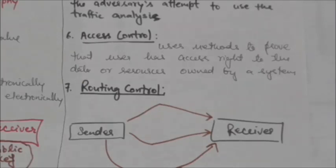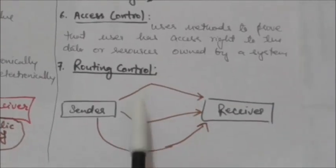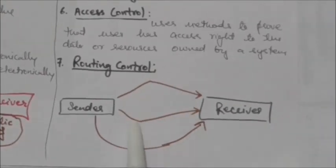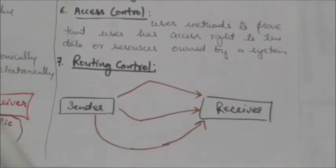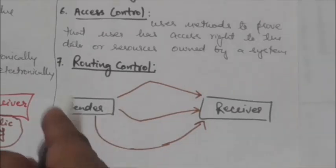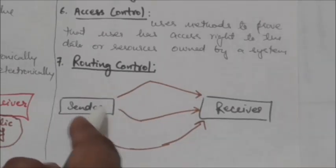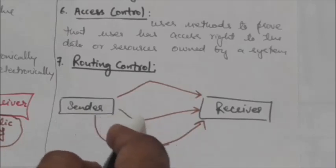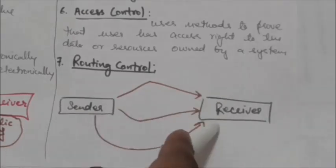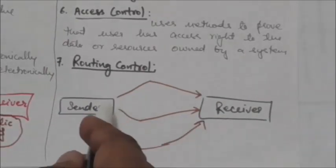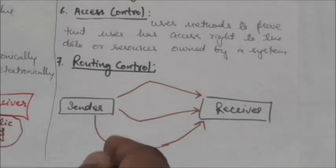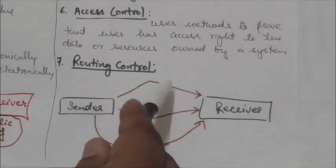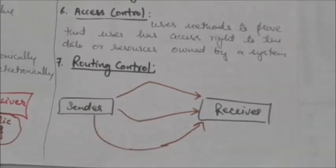The next mechanism is routing control. Routing control means selecting and continuously changing different available routes between the sender and the receiver to prevent an opponent from eavesdropping on a particular route.